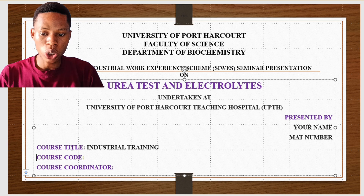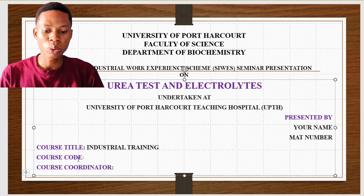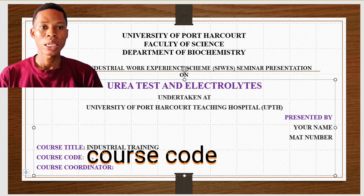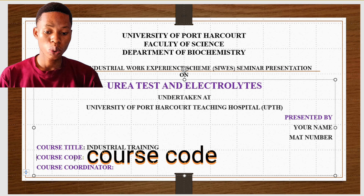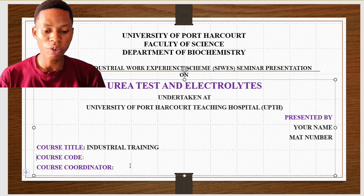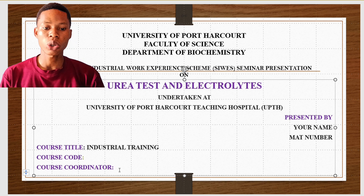Just below that, put the course title. The course title here is 'Industrial Training.' The course code depends on your department — for Biochemistry, I think it's BSC 325. Confirm your course title. Then put the name of your course coordinator right here.